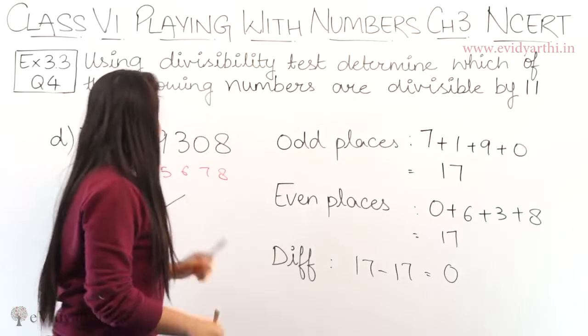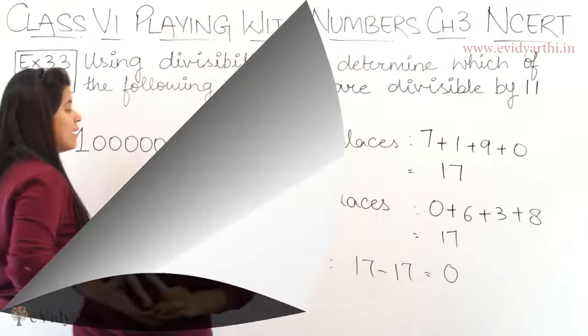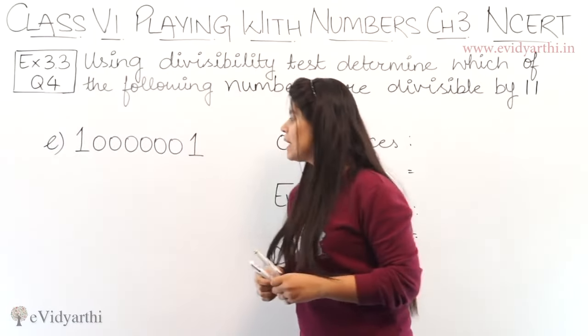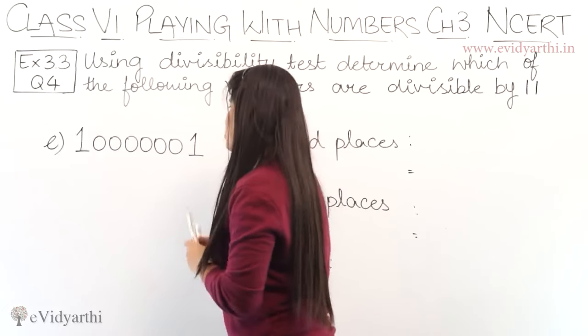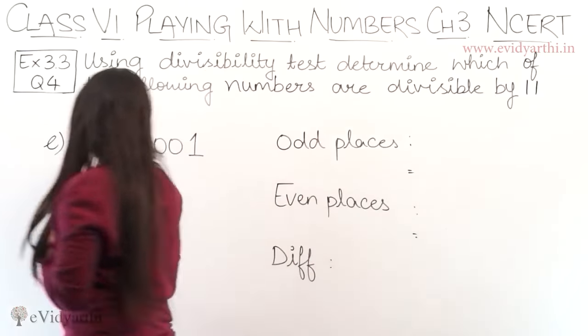Now, let's come to the E part. The number is 1, 0, 0, 0, 0, 0, 0, 1. So, let's number the positions: 1, 2, 3, 4, 5, 6, 7, 8.